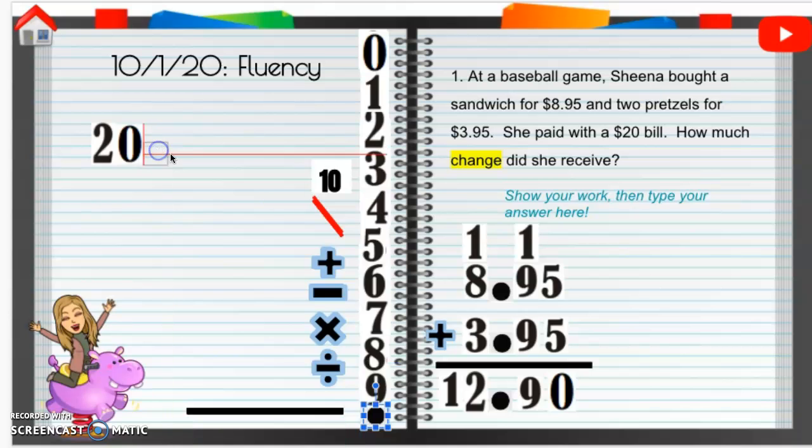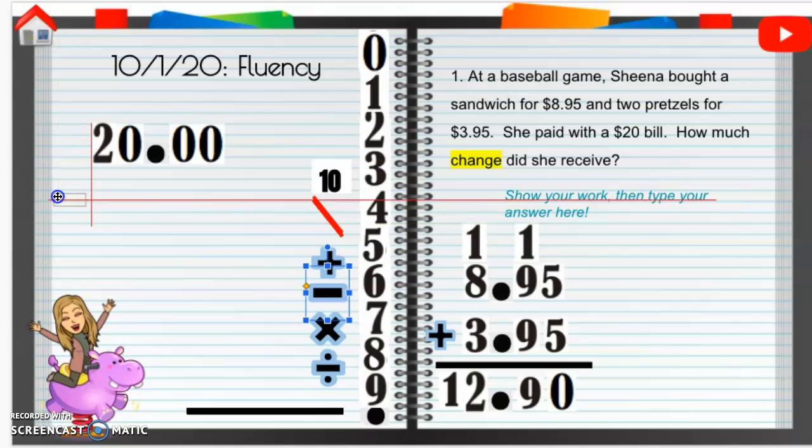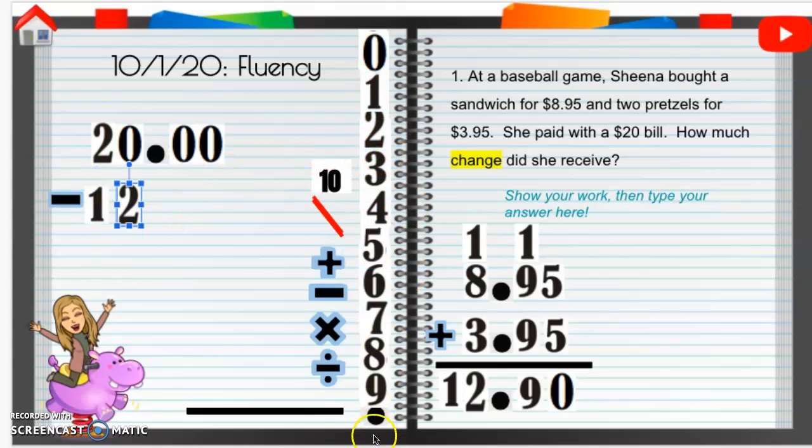Well, yeah, we have $20.00, or 20 and 0 hundredths. Then we're going to subtract. What are we subtracting? What was her total? Her total is $12.90. That's what she owes. So $12.00. Remember, we're lining up those decimals. Line them up. Line them up. And 90 cents.